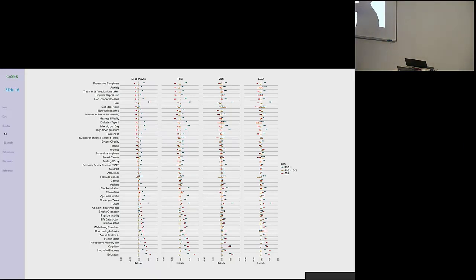So this is a lot of clutter, but let me see if I can explain it. So ELSA here, WLS here, HRS here, and this is the mega-analysis. We'll focus on the mega-analysis. And we see all the 45 phenotypes. They are organized by the size of the red coefficients, which are the coefficients on socioeconomic status, on family, on parental socioeconomic status. So basically from a large negative for depressive symptoms, anxiety, and treatment medications taken, all the way down to very strong positive coefficients for things like education, household income, and cognition.